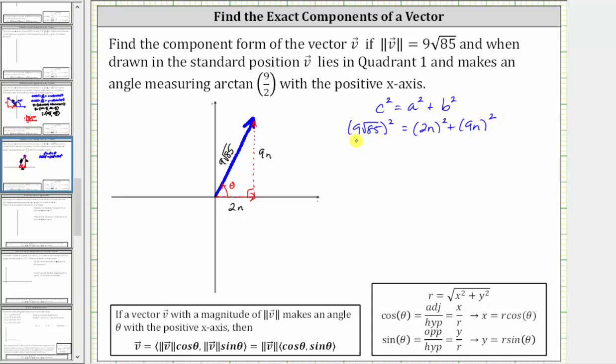To square 9√85, we square 9, which is 81, and multiply by the square of √85, which is 85. This equals (2n)², which is 4n², plus (9n)², which is 81n². Combining like terms, we have 81 × 85 = 85n².